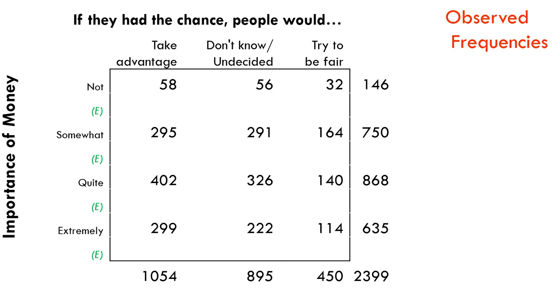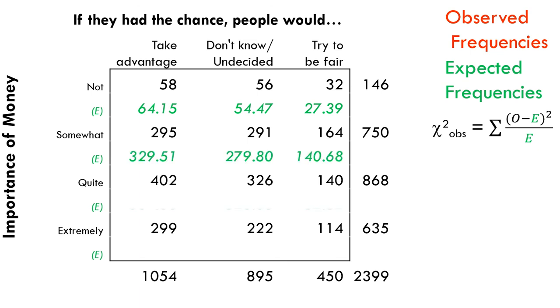Here's our observed frequencies. Let's do the expected frequencies to put into that formula later. You have to do the multiplication, like 146 times 1054 divided by 2399. It would be a pain to do this. The degrees of freedom is going to be 6 because it's 3 rows times 2 columns, so 4 rows minus 1 times 3 minus 1 is 6.